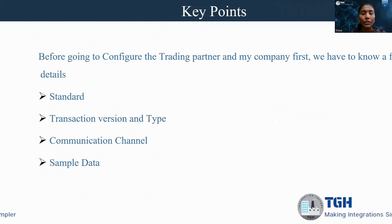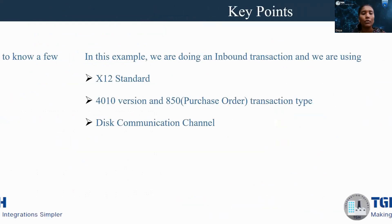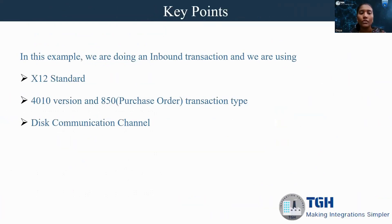Before going to configure the trading partner and my company, first we have to know a few details. One is standard, the second one is transaction version and type, third one is communication channel, and fourth one is sample data. In this example, I'm going to use X12 standard, 4010 version, and 850 transaction type.